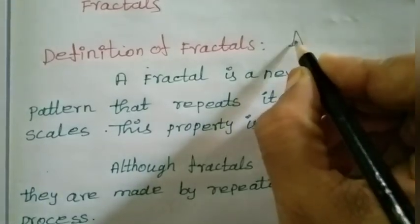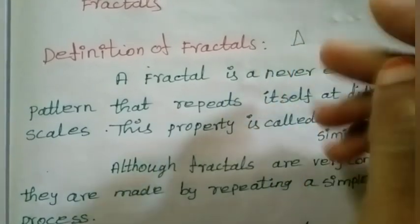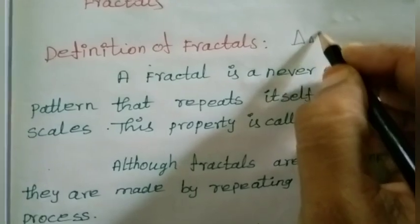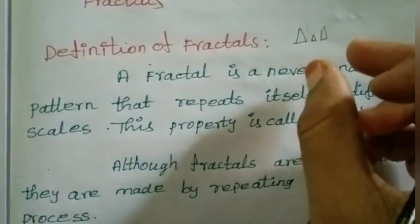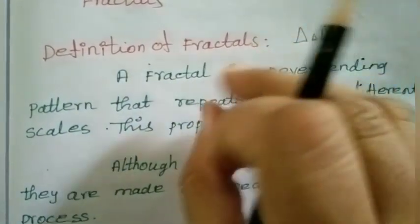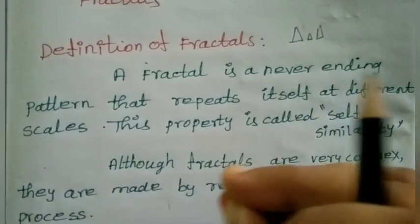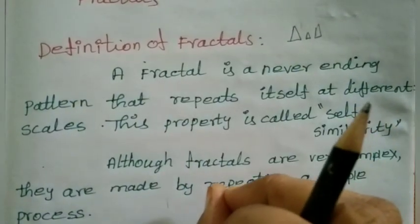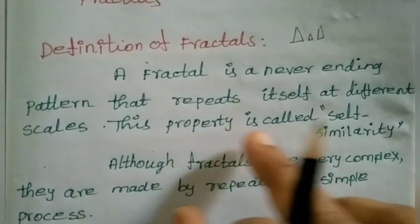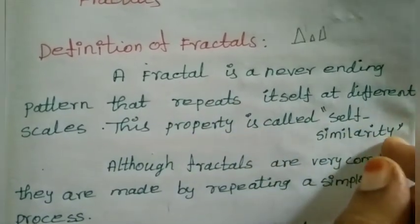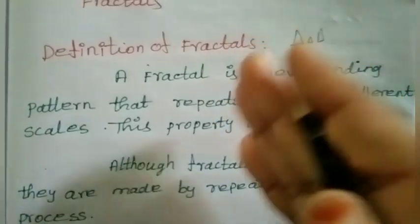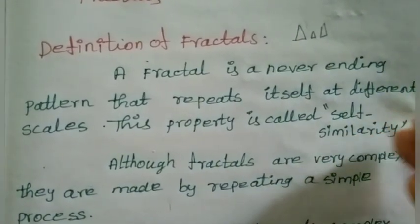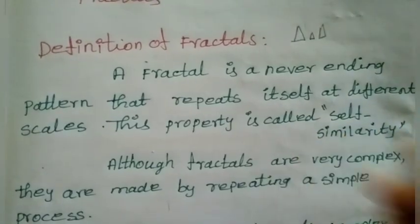If we take a triangle, it is repeated at different sizes — small, big. This is a repeated process. This property is called self-similarity.